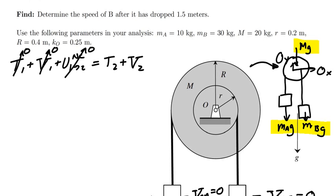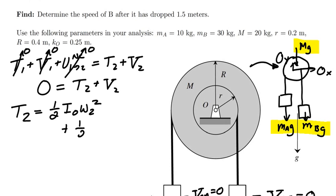So now what I have here is zero is equal to T2 plus V2, and I simply need to identify these two terms. So in terms of T2, at the second state, we're going to have the pulley being in pure rotation, so it's going to have a kinetic energy of one-half I about O times omega 2 squared. Then I'll have block A in translation, so I'll have one-half times M_A times V_A squared. And I'll have block B in translation, so I'll have one-half times M_B times V_B squared.